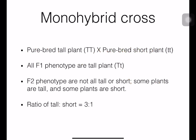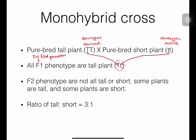For the monohybrid cross: the pure-breed tall plant is represented as TT (homozygous dominant) and the pure-breed short plant is represented as tt (homozygous recessive). When crossed together — this is the model Mendel used — all F1 plants show the tall phenotype. We can guess that the genotype becomes Tt, because one T comes from the tall parent and one t comes from the short parent, so the F1 genotype is heterozygous.